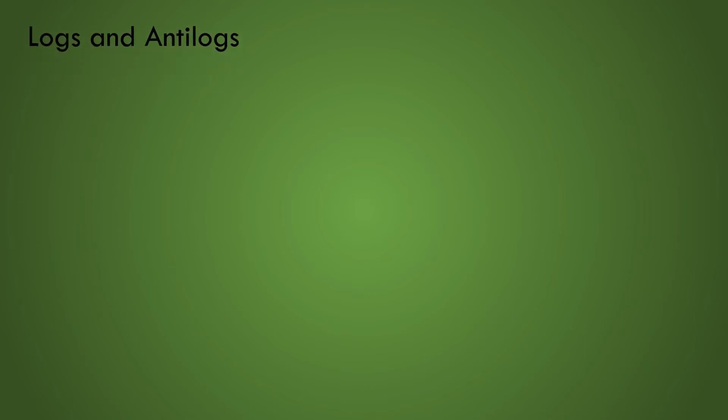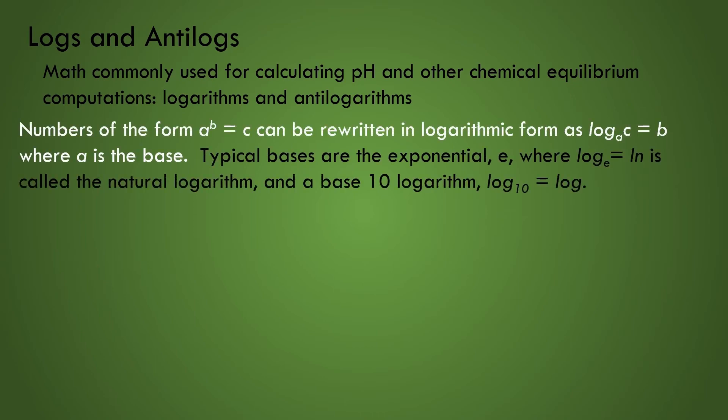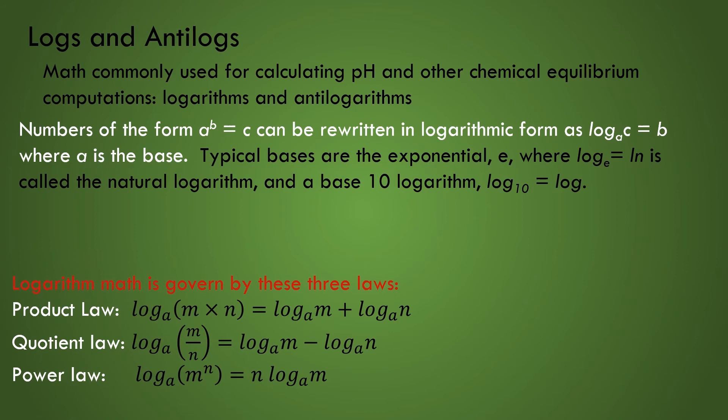Now we come to a specialty case of exponentials that is commonly used for calculating acid-base pH and used in chemical equilibrium computations, logarithmic and antilogarithmic math. For numbers of the form a to the power of b equals c, we can rewrite the exponential form into a logarithmic form shown where a is now called the base. In chemistry, the typical bases would be either the exponential e, called the natural logarithm, or the base 10, which is known simply as log.